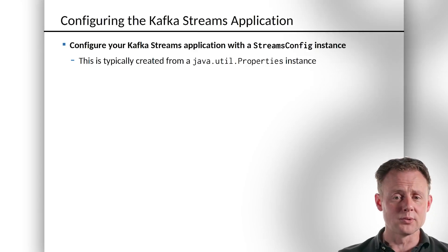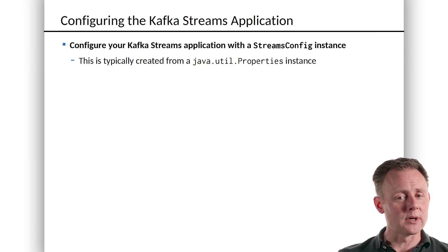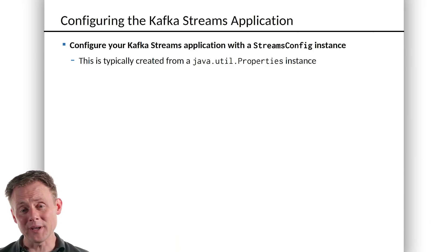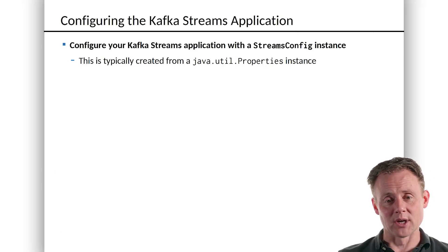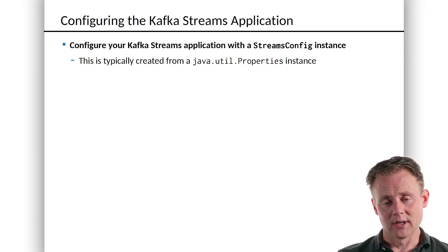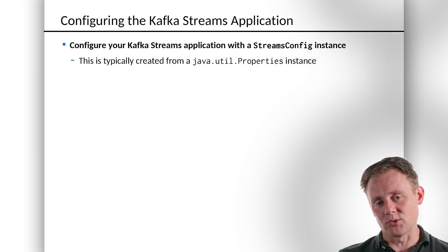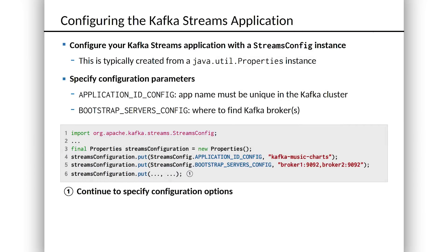If you've written Kafka producer or consumer code before, a lot of this will look strikingly familiar. If you haven't, that's okay, because it's actually pretty simple. We're going to start by creating a properties object, and we're going to fill it up with just a few parameters to get streams off and running. Let's take a look at what those are.